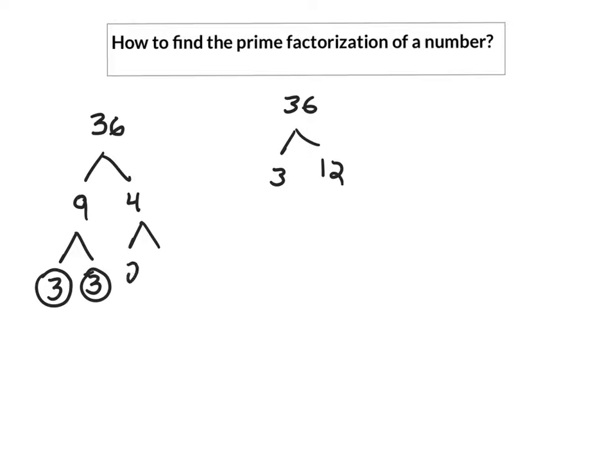The 4 is 2 times 2. They're all prime, so our string is 2 times 2 times 3 times 3. Writing it with exponents, we would write 2 to the second power times 3 to the second power. That is the prime factorization of 36.